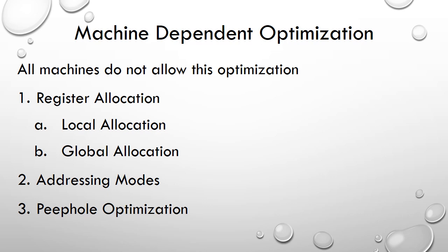We can also look at register allocation and addressing modes. In a machine there can be a limited number of registers — for example, in the 8085 microprocessor we have an accumulator and every operation is performed based on the accumulator; the result of every operation is stored in the accumulator only. If we have a different machine with many general-purpose registers, we can move data from one register to another to reduce the number of lines of code — this is the register allocation technique.